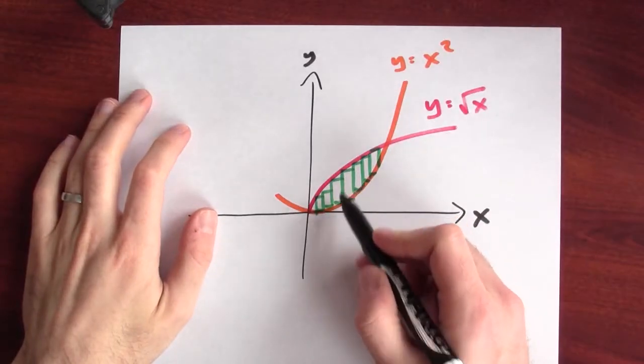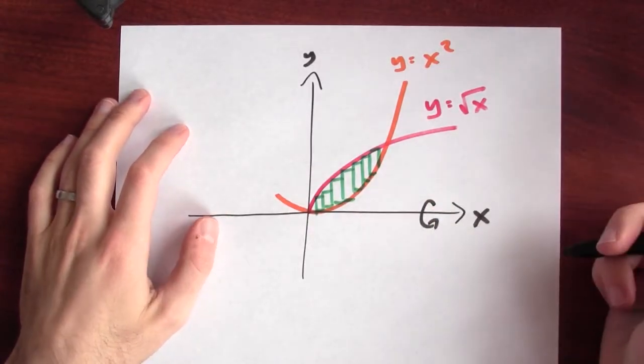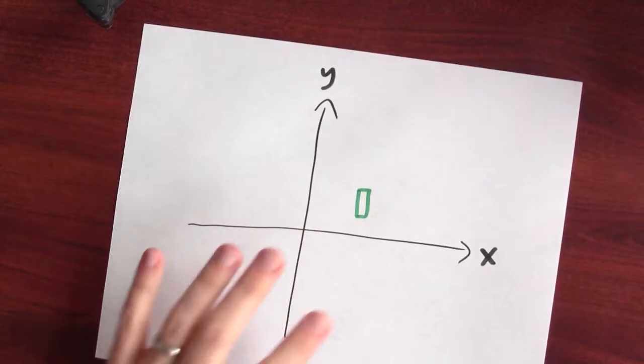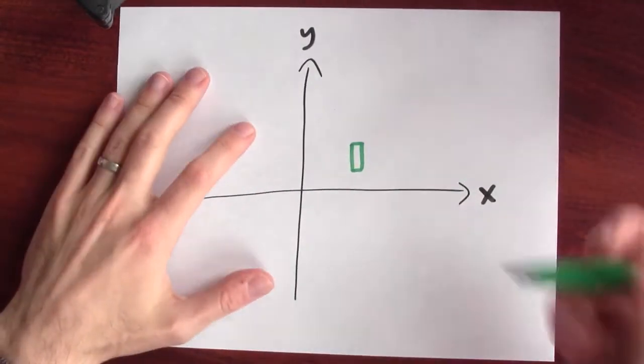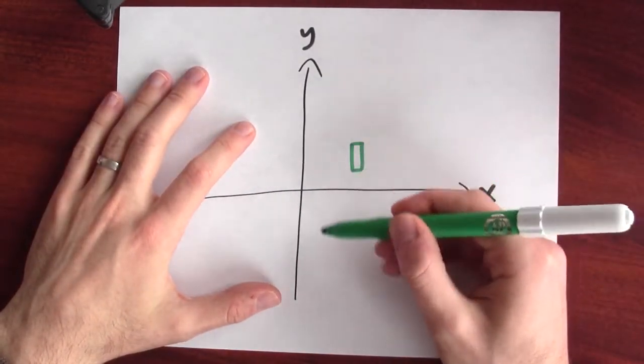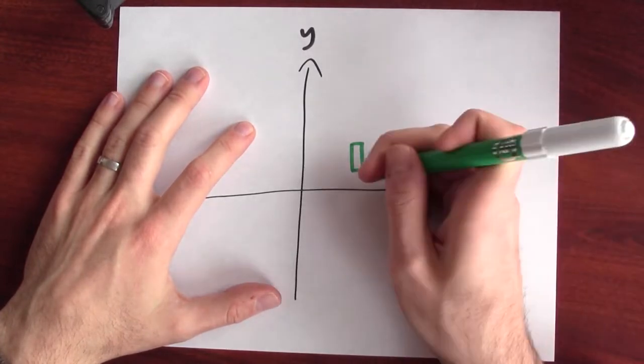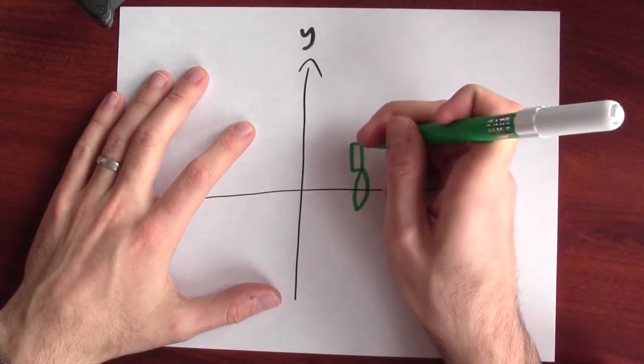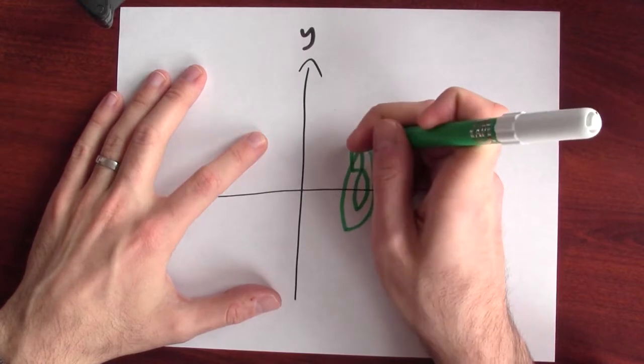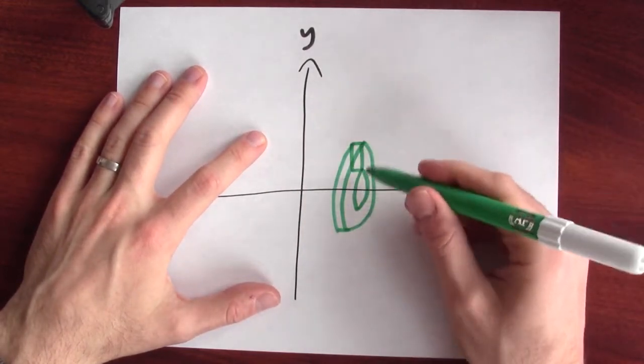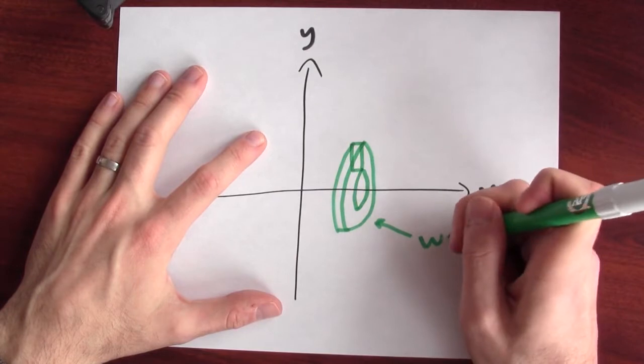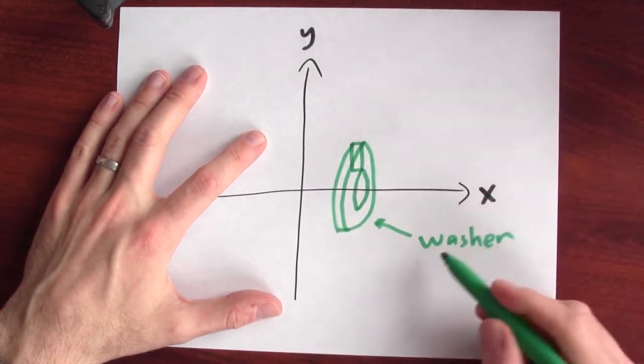I want to take one of these little thin rectangles and rotate them around the x-axis. So, just to get a picture here, let me just isolate a single rectangle and imagine taking this thin rectangle and rotating it around the x-axis. Well, what would happen when I do that is that I'll end up getting a shape that looks a bit like that. That shape we're going to call a washer.